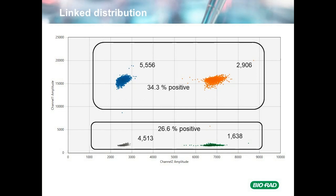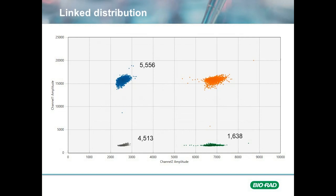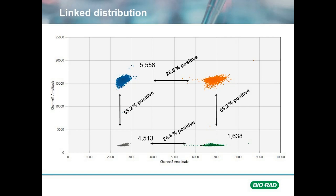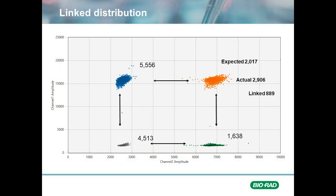A similar analysis of the HEX positive droplets in the presence or absence of a FAM signal shows a similar pattern. To calculate linkage, we first look at the single positives for both FAM and HEX droplets and calculate their abundance with respect to the negatives — in this case, 55.2% for target A and 26.6% for target B. We then take these ratios to extrapolate the number of droplets we expect in the double positive cluster, which in this case would be 2,017 droplets. The actual number of droplets in the double positive quadrant was 2,906 — or 889 more than expected. When these numbers do not match, we know there is linkage and are able to use the droplet counts to calculate how many are due to linked events.